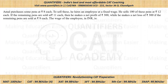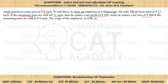Now let us come to the question. I hope all of you have given it a try. So it is given that Amal purchases some pens at the rate of eight rupees. Now he hires an employee at a fixed wage. He sells a hundred of the pens at 12 rupees each. If the remaining pens are sold at 11 rupees each, there is a net profit of 300. While he makes a net loss of 300 rupees if the remaining pens are sold at 9 rupees.